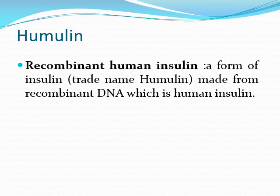Insulin used for diabetes was earlier extracted from the pancreas of slaughtered cattle and pigs. However, this insulin was not fully effective and sometimes caused ill effects on the health of the patient. So biotechnology helped in the production of recombinant human insulin — a form of insulin made from recombinant DNA — which is essentially human insulin.